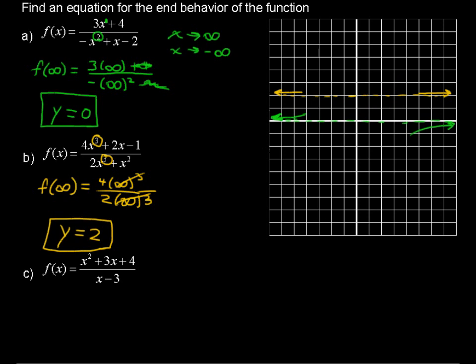Okay, the third one. Let's talk about f(x) equals x squared plus 3x plus 4 over x minus 3. In this case, when the degree of the numerator is greater than the degree of the denominator,